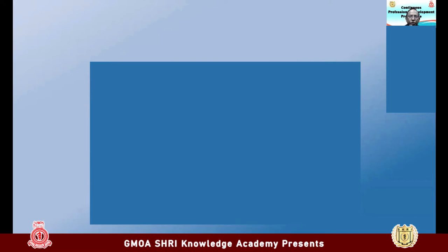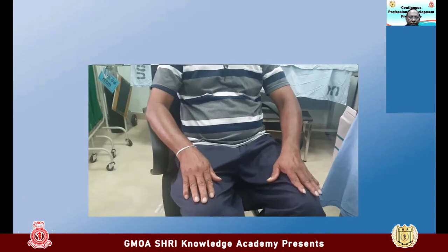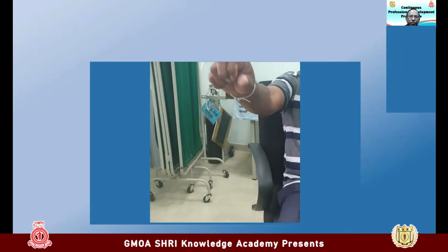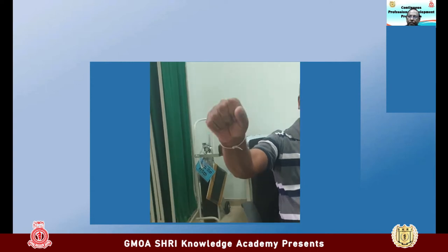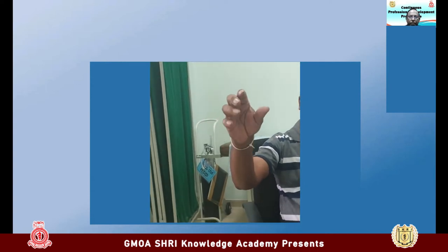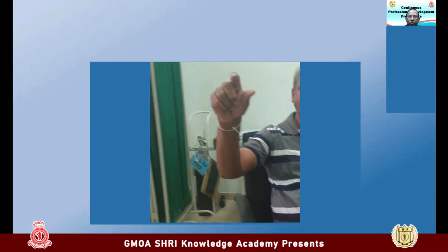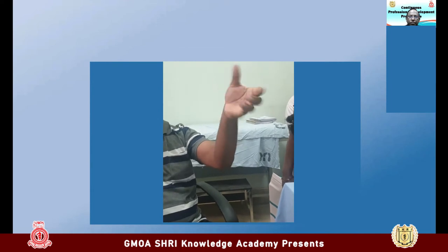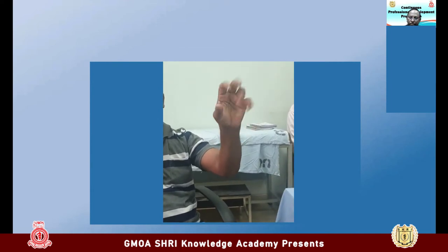I'll play the video again. You have to decide whether this patient has Parkinsonism. If you think so, on what grounds do you make the diagnosis? If you think the patient doesn't have Parkinsonism, on what grounds do you think so? I'm showing some physical signs here.